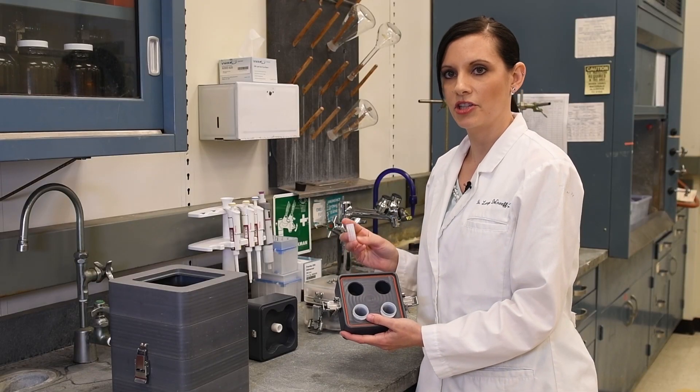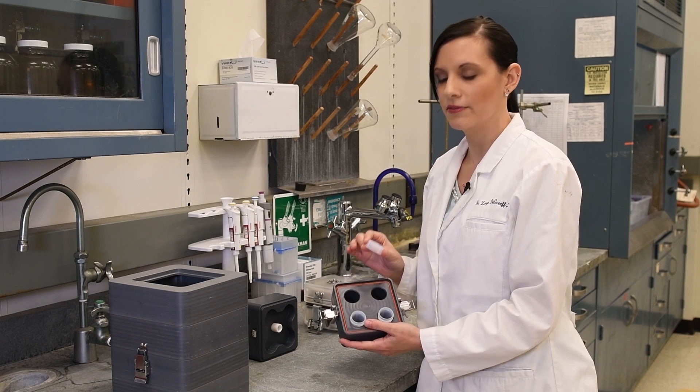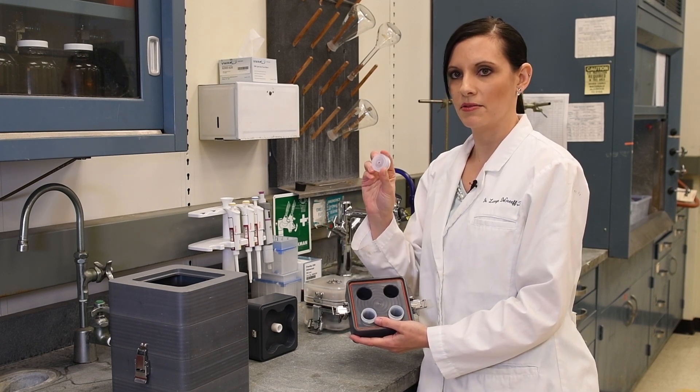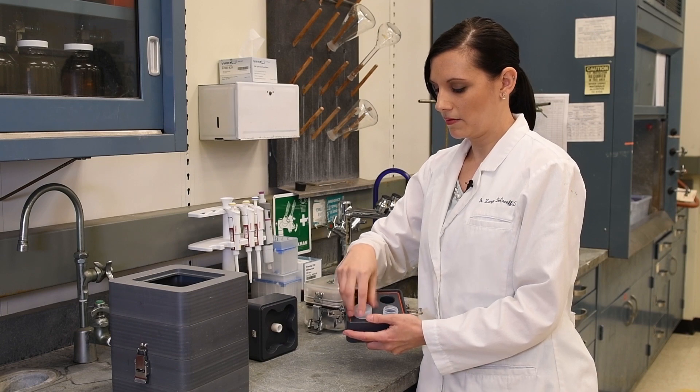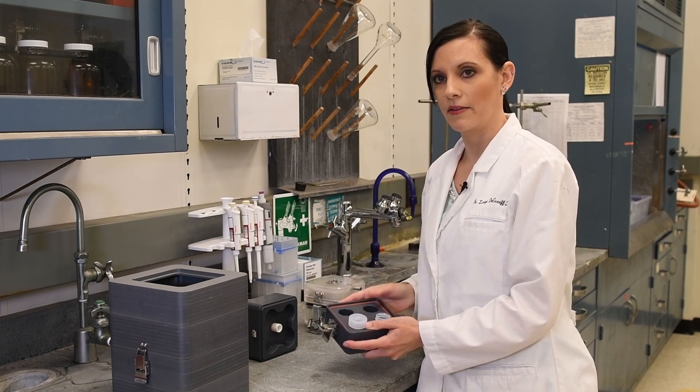You can also really easily change the amount of odor coming out of a single vial by putting a lid with a restricting hole on it. And that will lower the amount coming out of this vial.